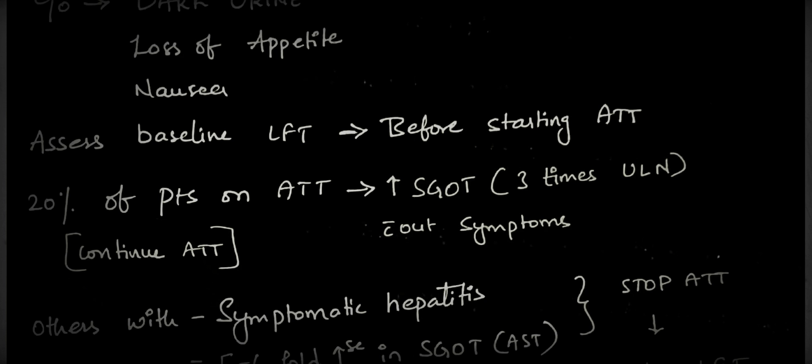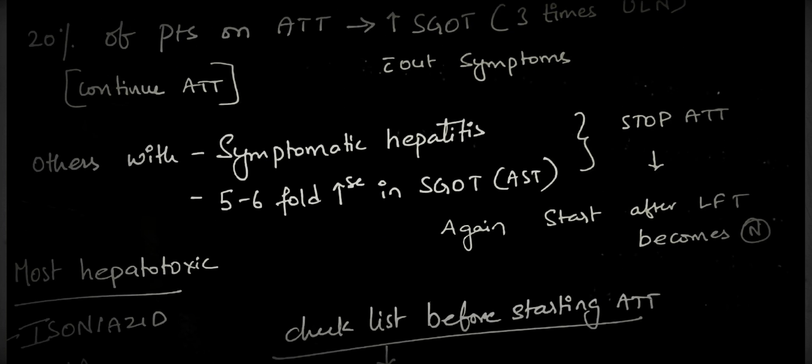20% of patients on ATT who are drug susceptible will have increased SGOT, a liver enzyme, up to three times upper limit of normal. These patients are without symptoms and it is of no consequence. We can continue ATT in them.